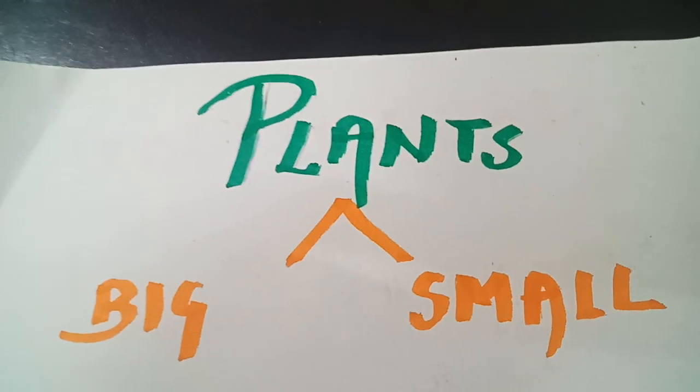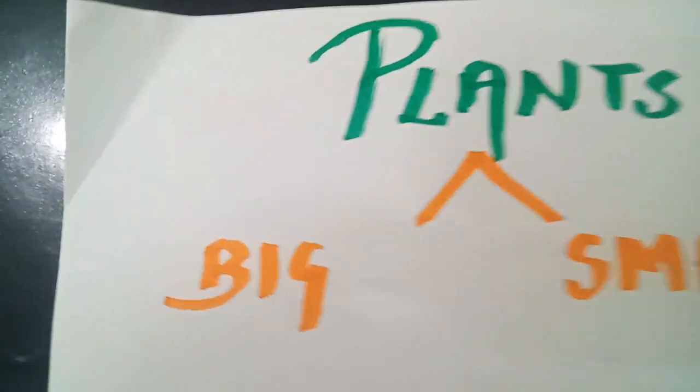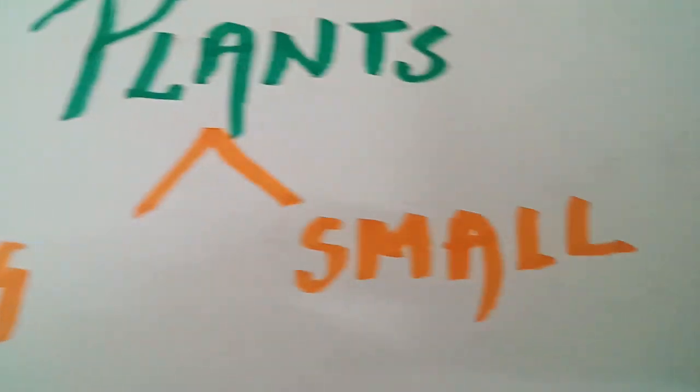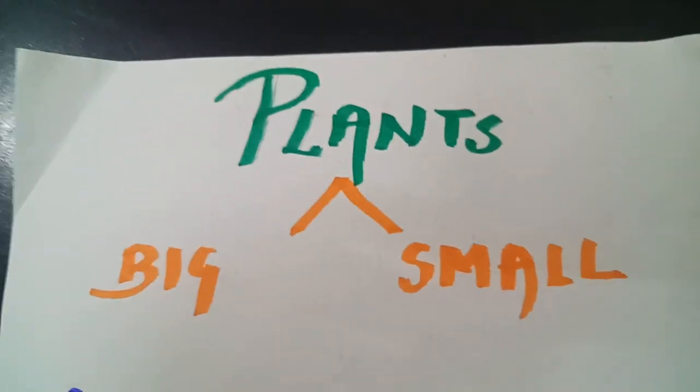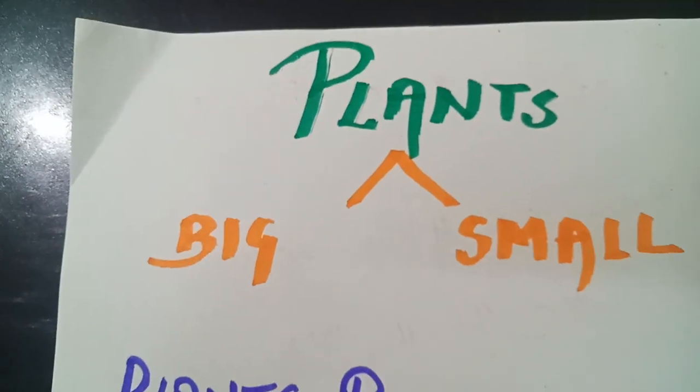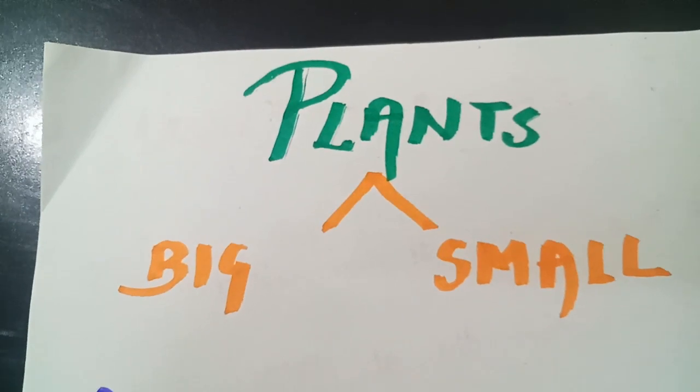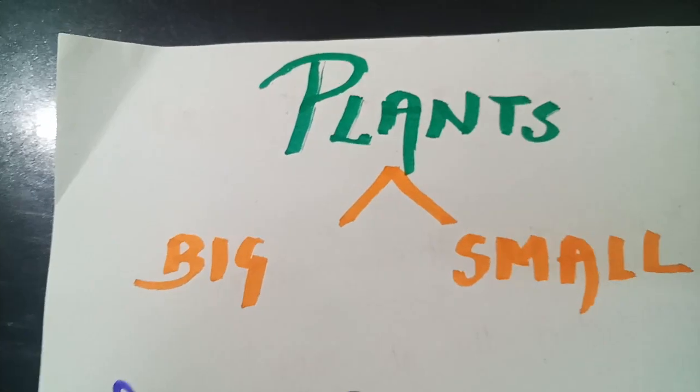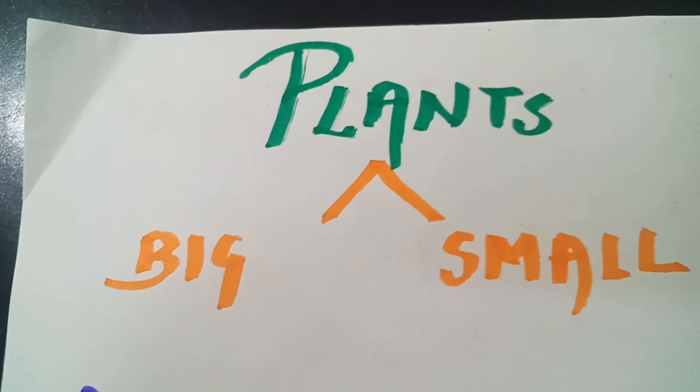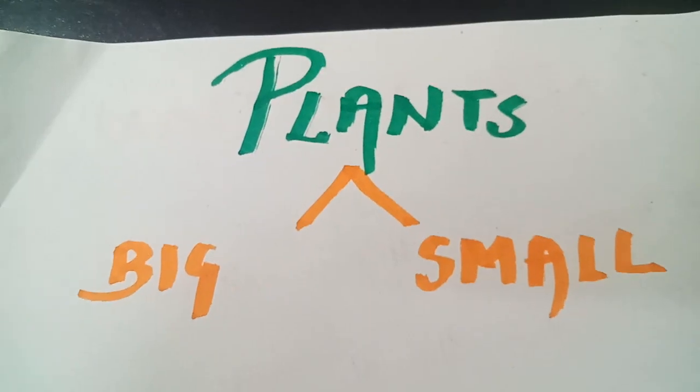We can see different types of plants in our daily life such as big plants or small plants. Plants can be of various types. Now do you know what plants actually are? Living organisms deep rooted inside the earth having different parts like root, leaf and stem.